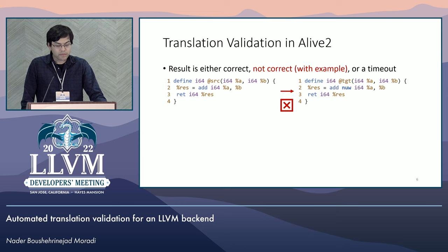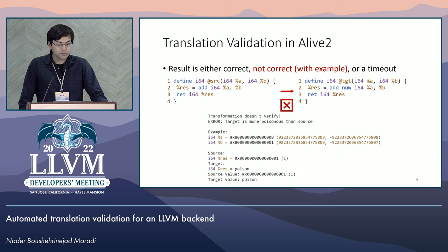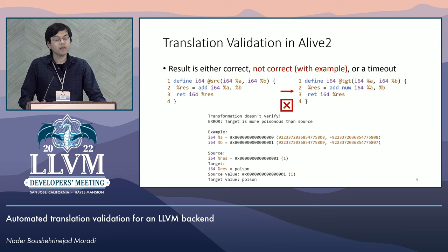So Alive reports this as a correct transformation. However, this transformation is not correct in the other direction, since the target function can produce a poison value on inputs when there is some overflow. Alive 2 identifies this transformation as not correct. Further, it provides a counterexample where the target function produces a less defined value than the source function. Here we see the example input and the result of the two functions.